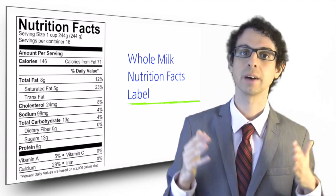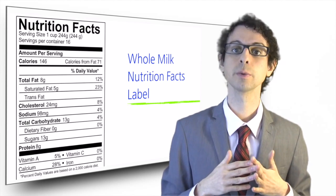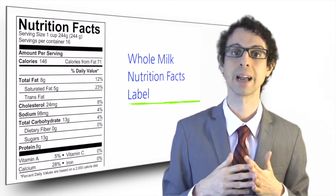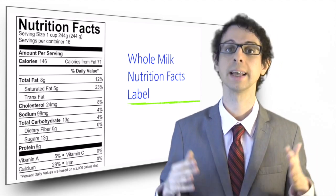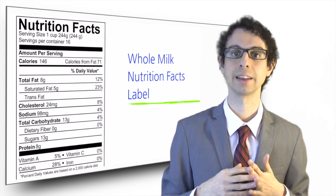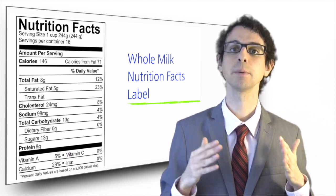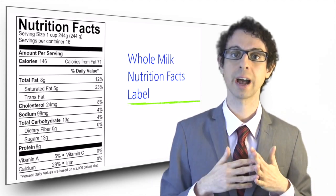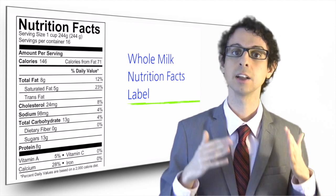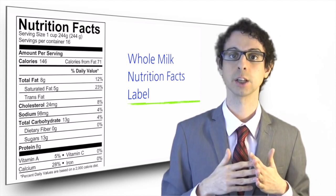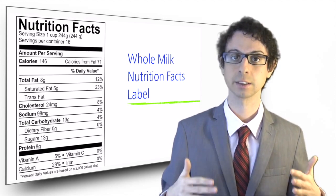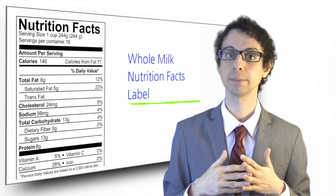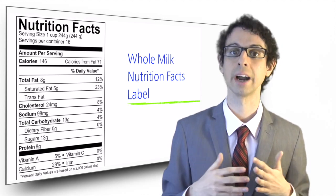Next, we have the total grams of proteins — 8 grams — and the content of some important micronutrients expressed as percent of the daily value. This cup of milk covers 5% of our average daily need for vitamin A, 28% of our need for calcium, while it doesn't contribute to our daily need for vitamin C or iron.